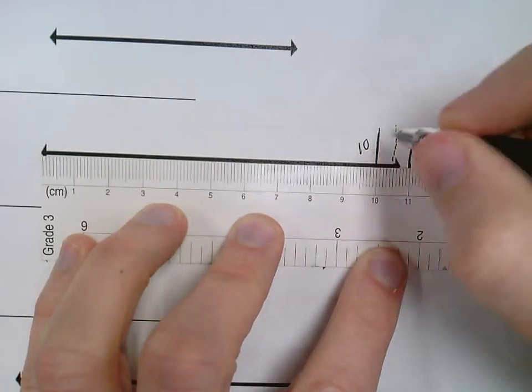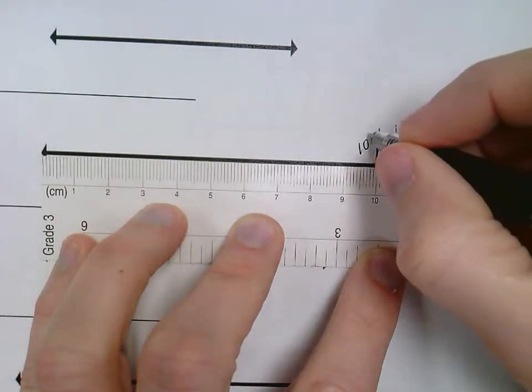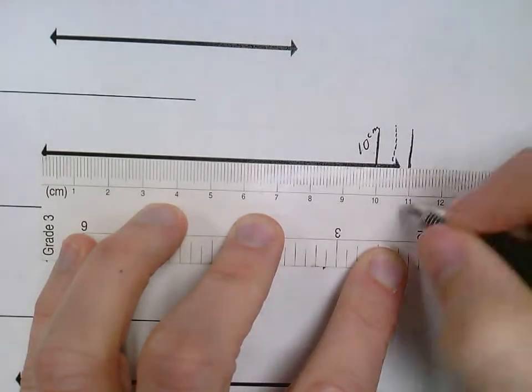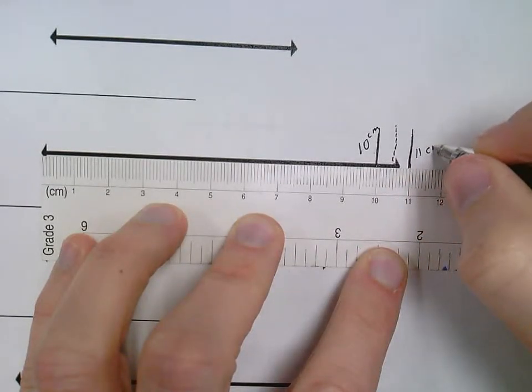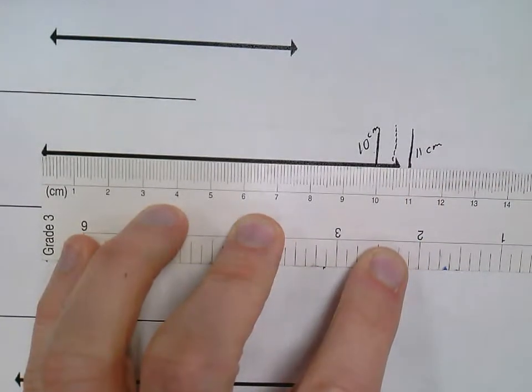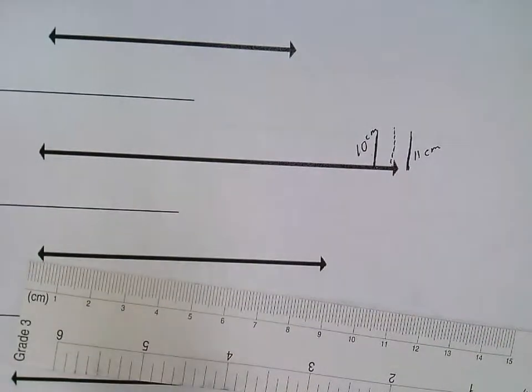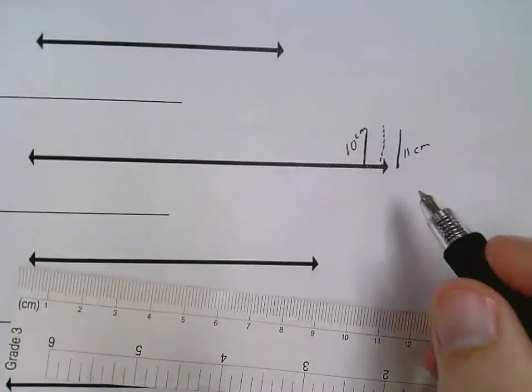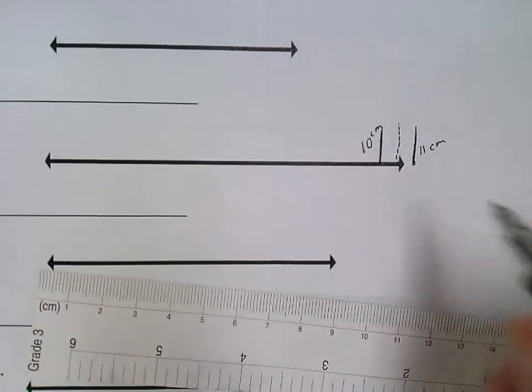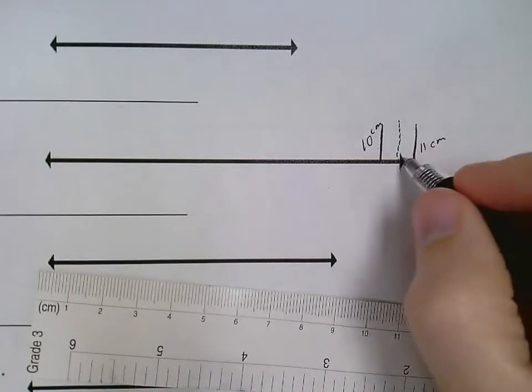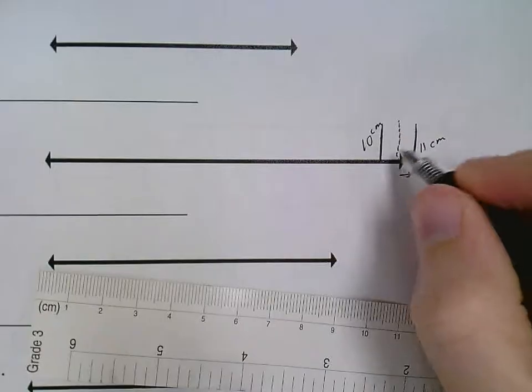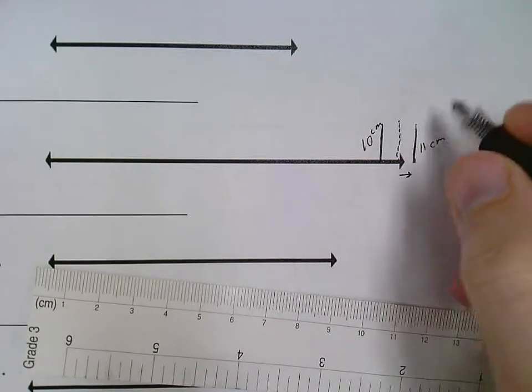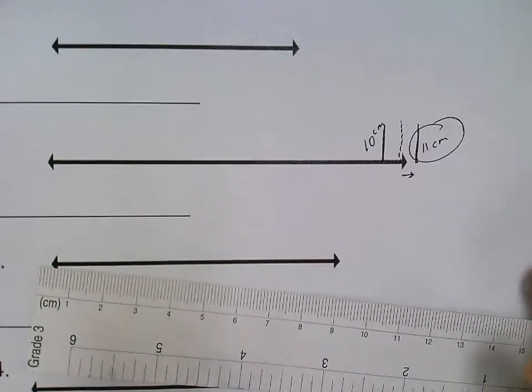So I labeled my sides. This side's 10 centimeters, 10 cm. This side's 11 centimeters, 11 cm. And at this point I can remove my ruler, and I see that I'm easily closer to the 11 centimeters, 11 centimeter side, because my arrow is on that side of the dotted line. So I'm closer to that side, 11 centimeters.